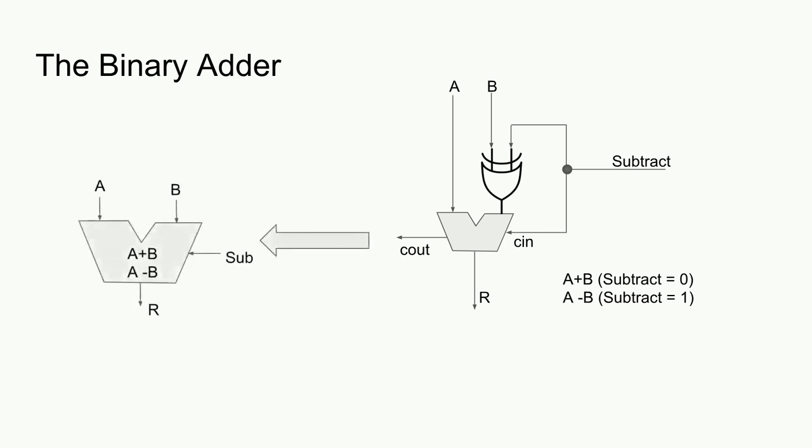Here we have a single adder which takes the inputs A and B, as well as subtraction, and produces the result R. Remember that the problem we are trying to solve is how to negate the result R if we are doing a floating point operation and the result R is less than zero. There are a few obvious solutions to the problem.